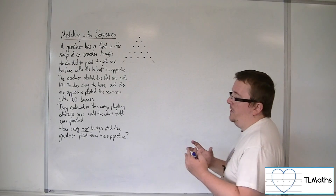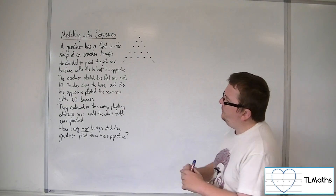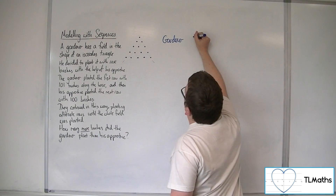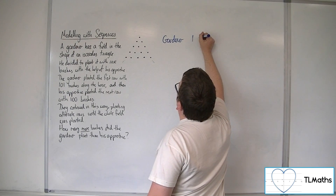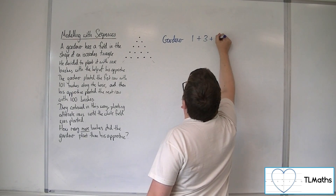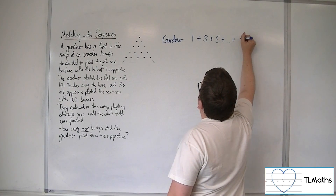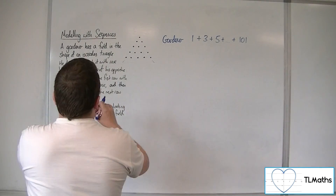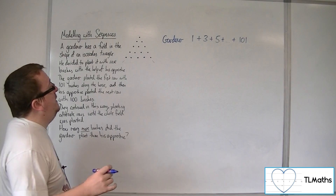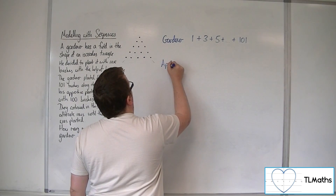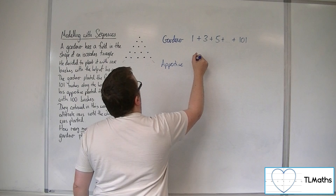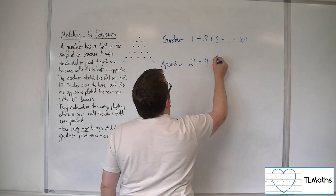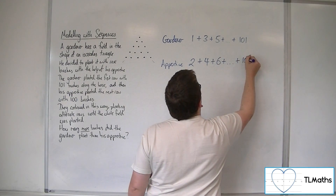What we could do is look at those two separately. The gardener is planting one at the top, then three, then five, and so on all the way up to 101 rose bushes along the base. And the apprentice is planting the second row with two bushes, plus four, plus six, plus all the way up to 100.